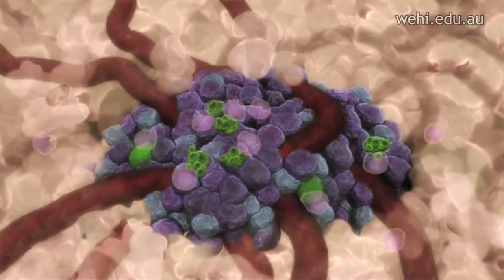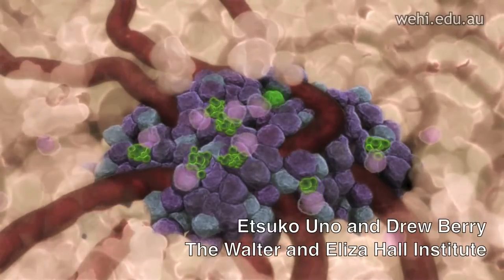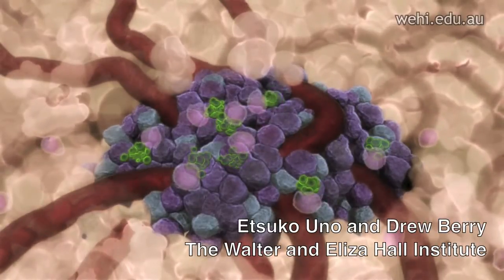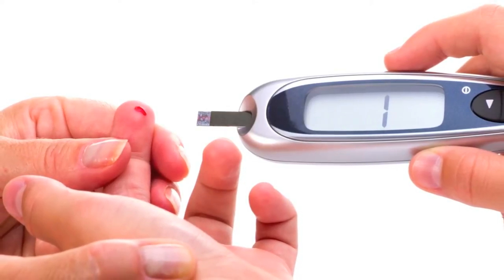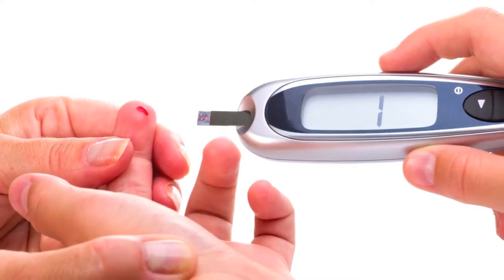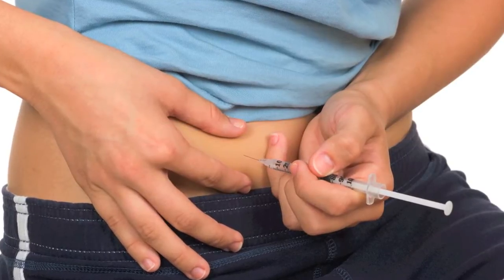Type 1 diabetes is an autoimmune disorder which primarily affects children. In this disease, the body's own immune system actually attacks the insulin producing cells. They have to persistently monitor their own blood glucose levels and inject themselves multiple times throughout the day with insulin.